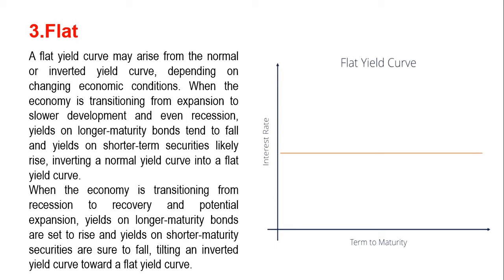A flat yield curve happens when all maturities have similar yields. This means that the yield of a ten-year bond is essentially the same as that of a thirty-year bond. A flattening of the yield curve usually occurs when there is a transition between the normal yield curve and the inverted yield curve.